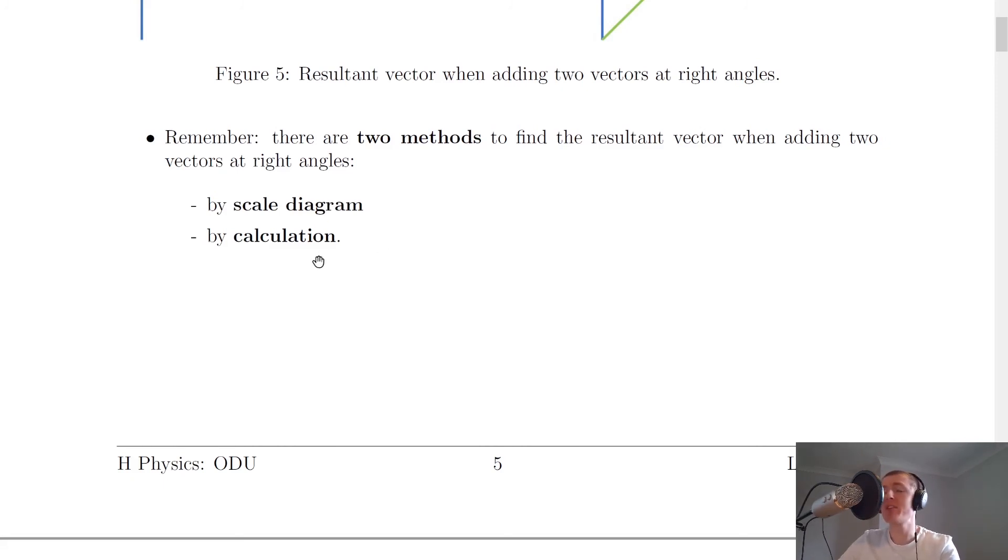And for the calculation method, remember that uses Pythagoras with c squared equals a squared plus b squared to find the magnitude of the resultant vector. And then you need to use tan theta equals opposite over adjacent to find your direction. You would also have to use compass points or bearings to state your final direction as well.